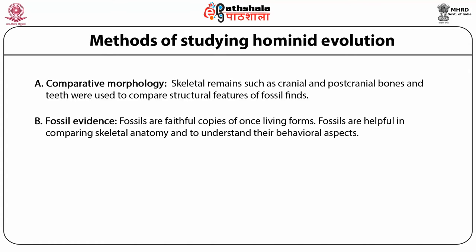The next method is fossil evidence. In this, the process of fossilization means hard animal parts such as bones and teeth are replaced by minerals. These fossils are faithful copies of once-living forms. Generally, cranial bones and teeth are recovered as hominid fossil finds, while post-cranial bones, which are prone to rapid disintegration, are scarcely found. Fossil finds are not only helpful in comparing skeletal anatomy but also help to understand behavioral aspects such as dietary practices.